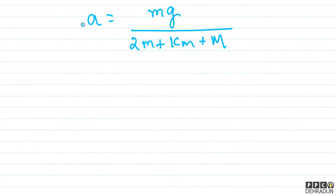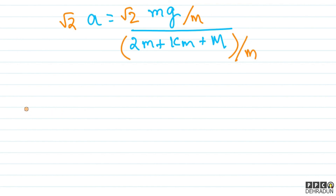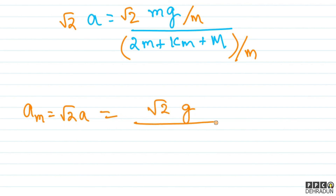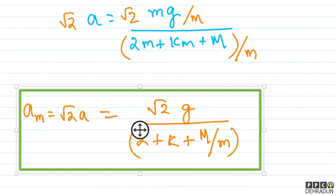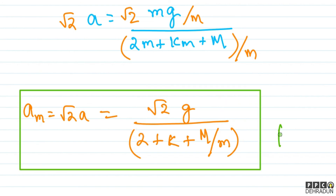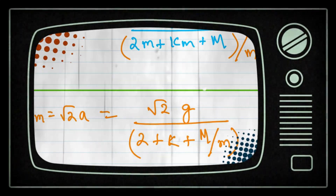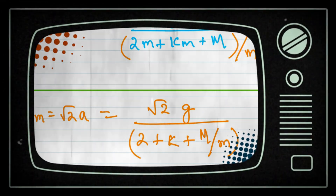Ab bachon, humein chahiye tha root 2 times a. To ek kaam karte hain: is poore equation ko root 2 se multiply kar dete hain, aur simplify karne ke liye small m se divide kar sakte hain. Toh hamara final answer: acceleration of small m equals root 2 multiplied by g, whole divided by (2 plus k plus capital M upon small m). Yeh bachon ho jayega hamara final answer. I hope ki aapko yeh solution achhe se samajh aaya hoga. In case koi doubt reh jaata hai, feel free to contact me — I will be very happy to help you. Take care bachon, bye bye.